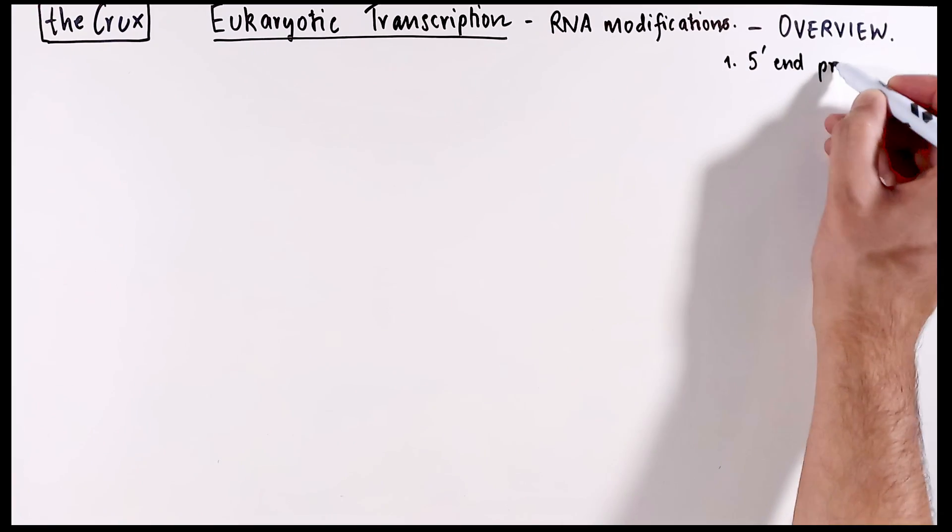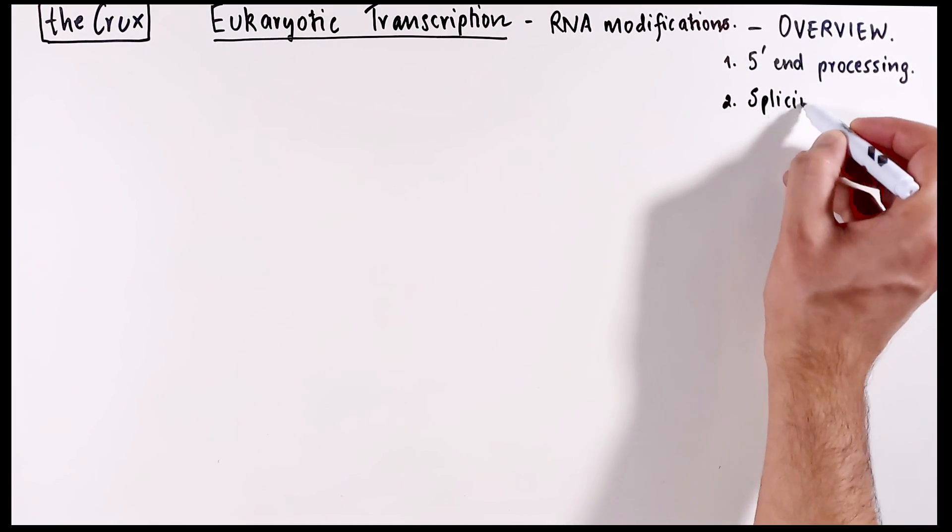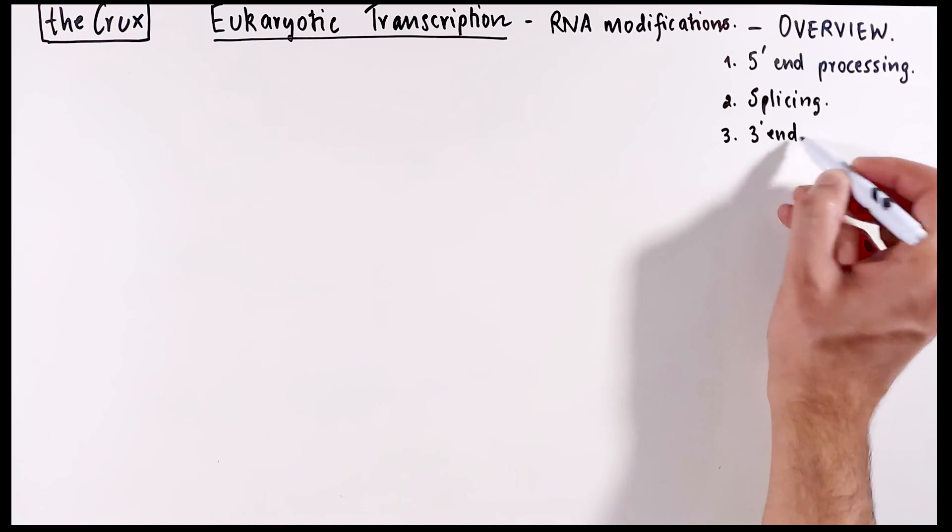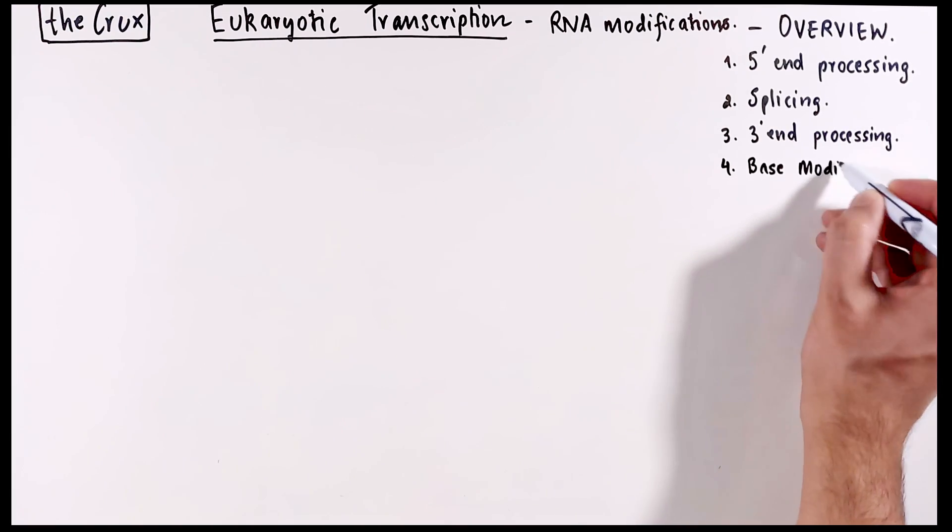The modifications we will discuss are 5' end processing which is capping, splicing, 3' end processing which is tailing, and finally some base modifications that occur in the RNA.